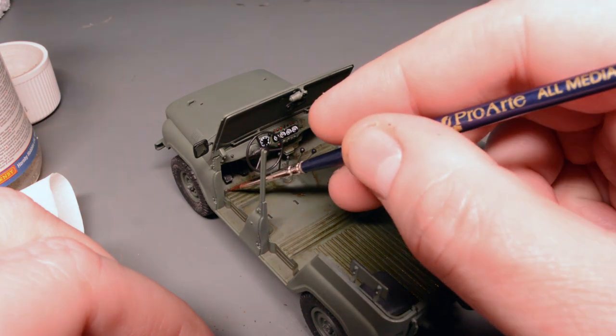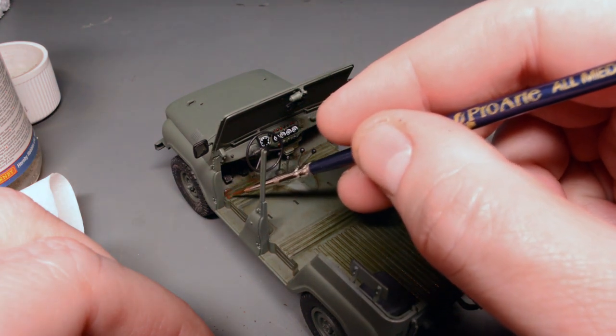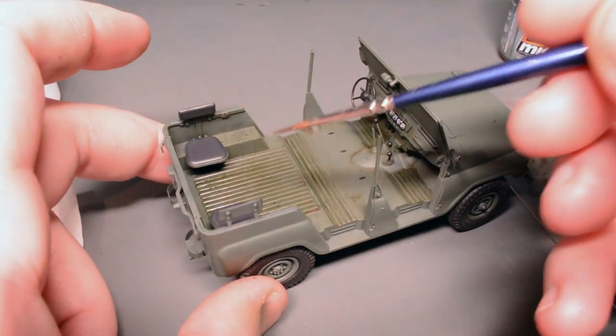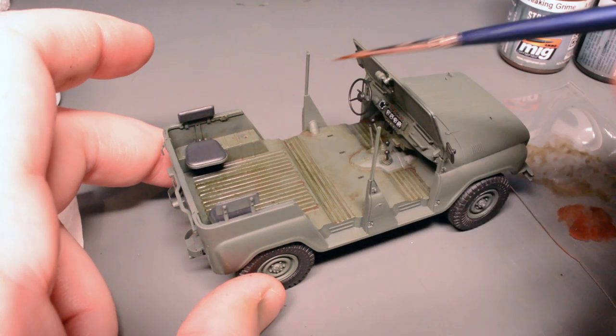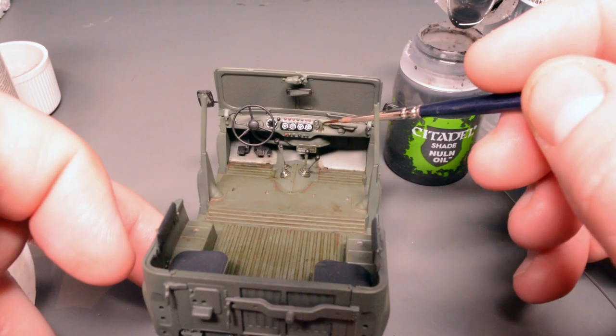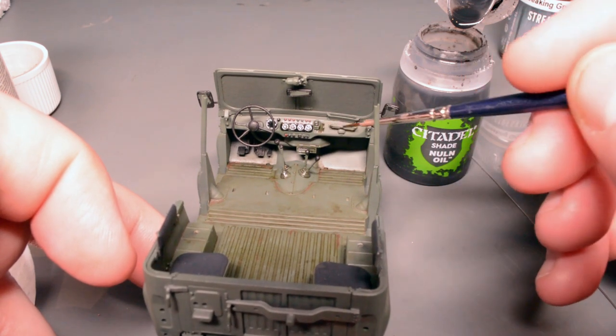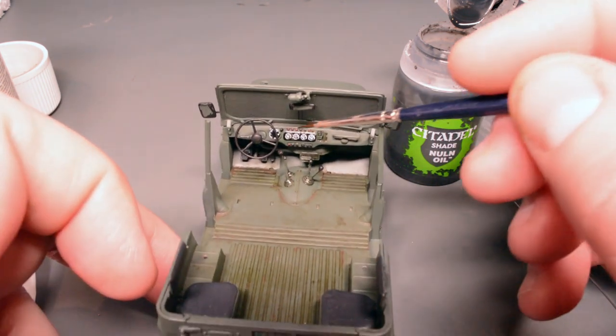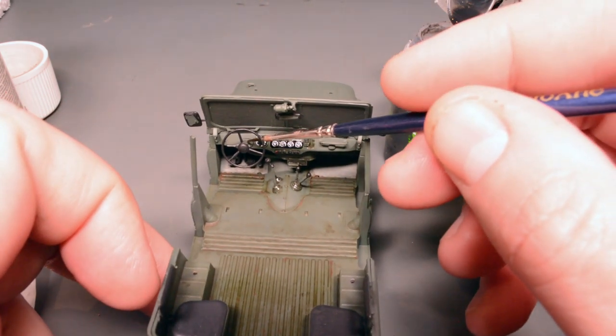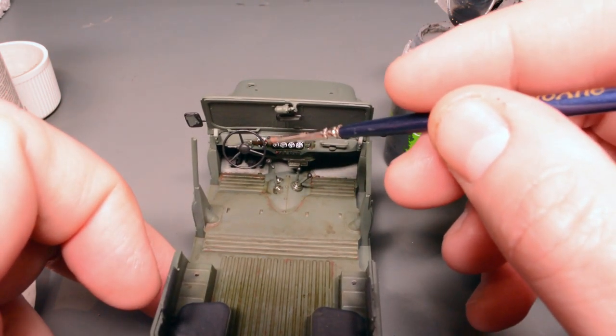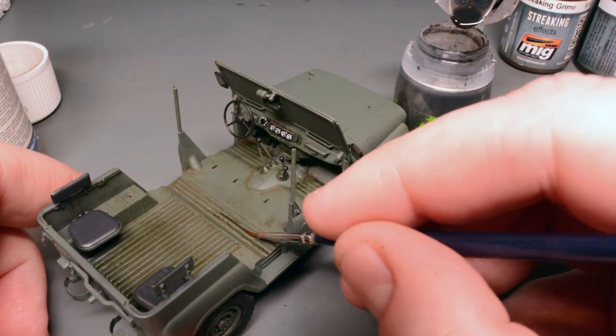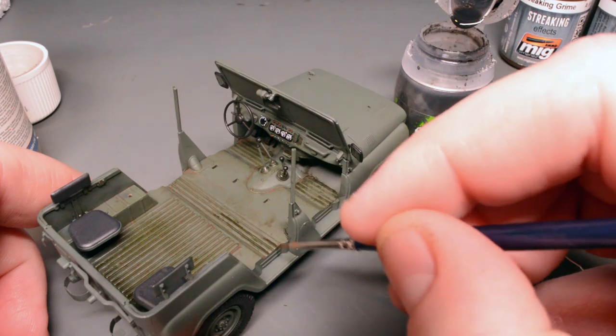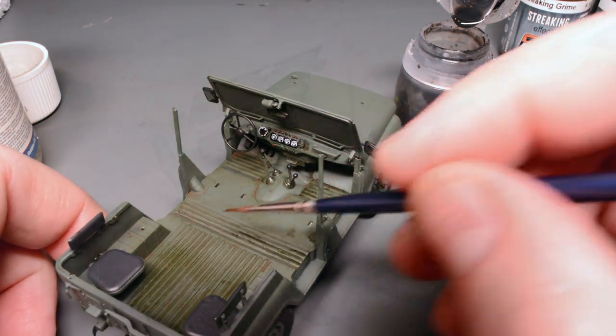Even though the rust effect was helping to break up the interior a little bit it wasn't really boosting the contrast in the way that I would have liked. I concentrated the effect on the higher use areas such as under the pedals and on the floor of the rear bed and then I switched over to using Citadel's Nuln Oil. This is a black acrylic wash but it dries really smoothly with nice gradients in it and I added this to the dashboard on the raised details and around the steering wheel and I also flowed some into the deep grooves on the interior. This just darkened the paint in that area and just boosted the contrast that little bit and helped the raised details stand out.